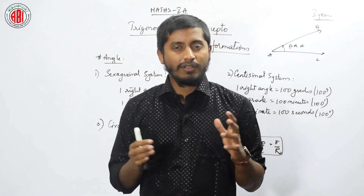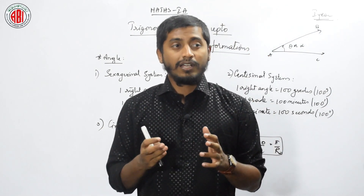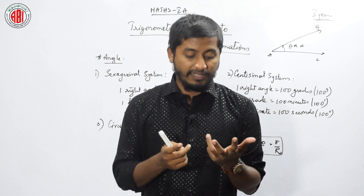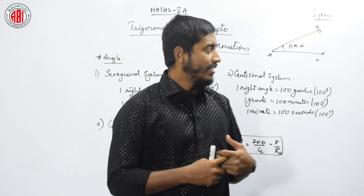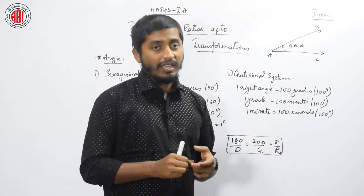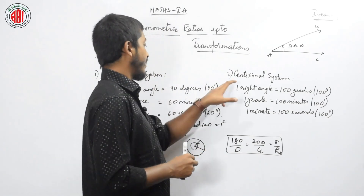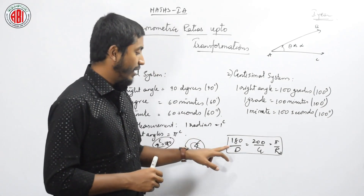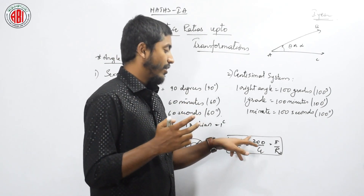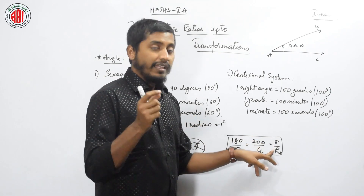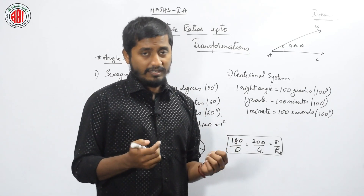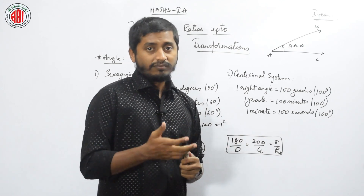Hope you all know that you have such unit classifications in measurements and dimensions in your physics concepts — like CGS system, MKS system, SI. Similarly, these are also kinds of notations for measurements of angles. Now let us see the relationship between sexagesimal, centesimal, and circular measurement. That is: 180 divided by D (whatever degree it is, for example 30 degrees) — 180/30 — is nothing but 200 divided by the grade, which is equal to π divided by the number of radians.